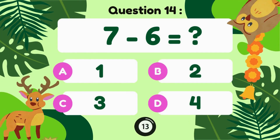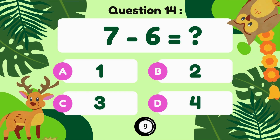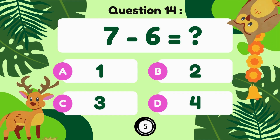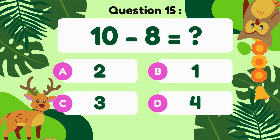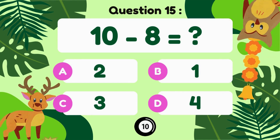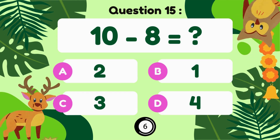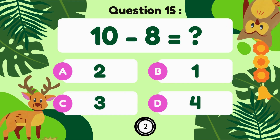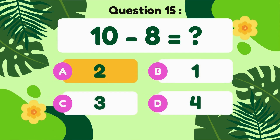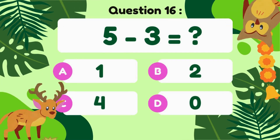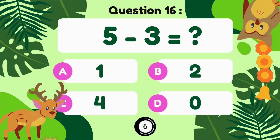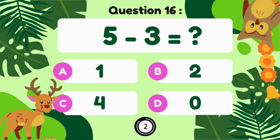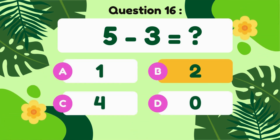7 minus 6... 7 minus 6 equals 1. 10 minus 2. 7 minus 2. 5 minus 3 equals 2.